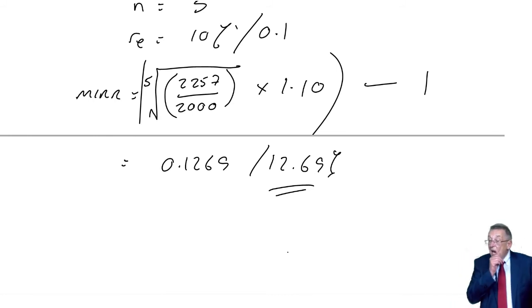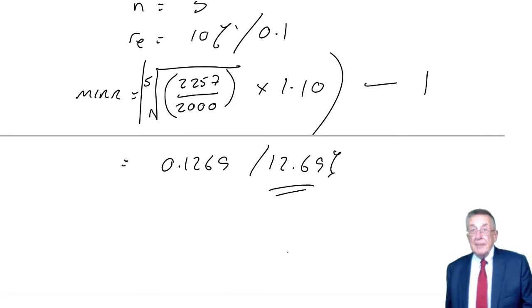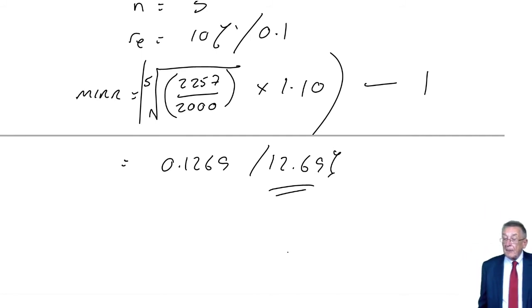I get 0.1269 or 12.69%. Obviously different calculators, you have to put figures in in different orders. Make sure you can get that. Don't be wasting time messing around in the middle of an exam. But arithmetically, there is the modified internal rate of return.